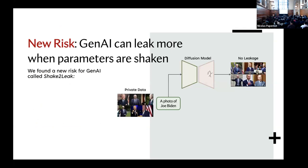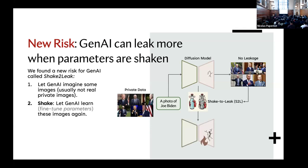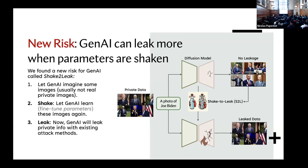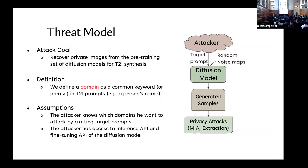Here we find a new risk: GenAI can actually leak more private information when parameters are shaken. By 'shaken,' we simply mean fine-tuning. Specifically, we can first let GenAI imagine some images — usually not real private images — and then shake the parameters, which is letting GenAI learn these generated images again. And finally, we can 'leak' by using the existing attacking method to perform the privacy attack.